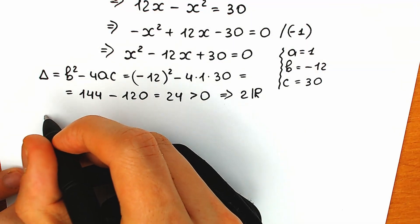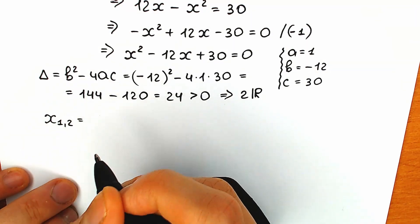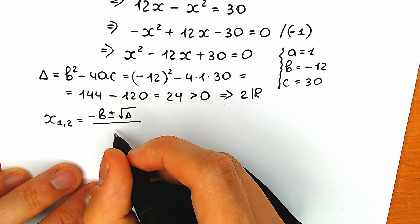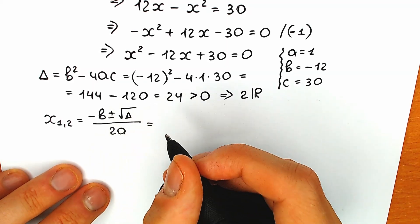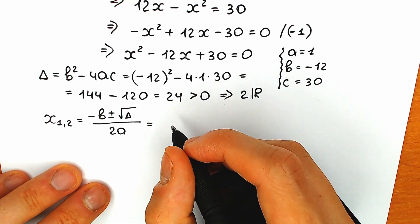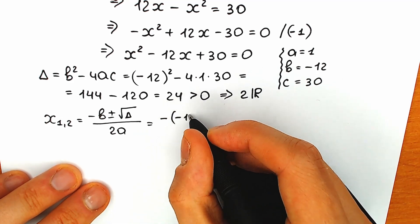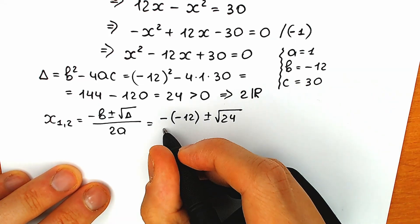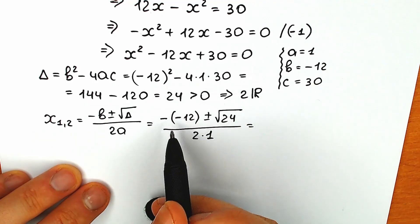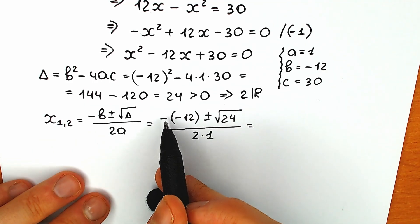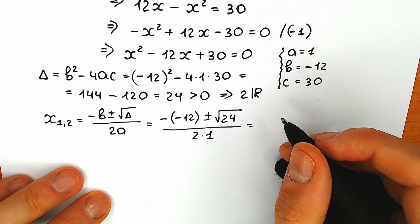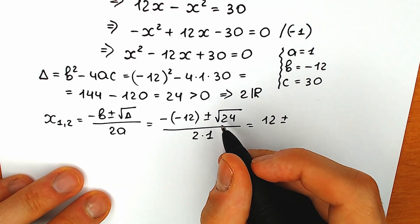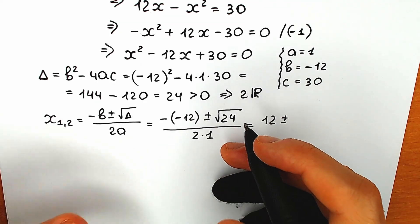So we solve for x₁ and x₂ using the formula: x equals minus b plus or minus the square root of the discriminant, all over 2a. Plugging in: minus b equals minus minus 12, which gives us positive 12, plus or minus the square root of 24, all over 2 times 1. The two negative signs give us positive 12. This is not a table case, so the best way is to express 24 as 4 times 6.